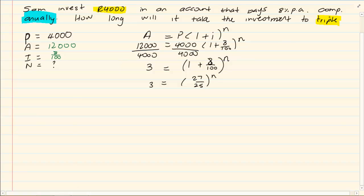Now how I got 27 over 25? I simply added these two values. Now let's go back to our sequence and series where we had discussed logs.